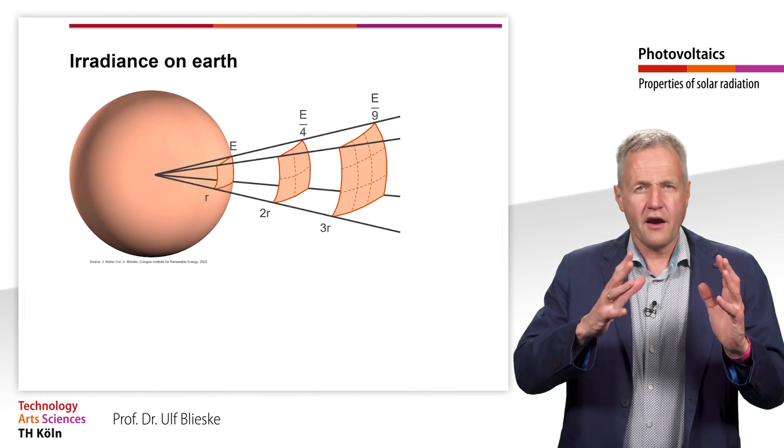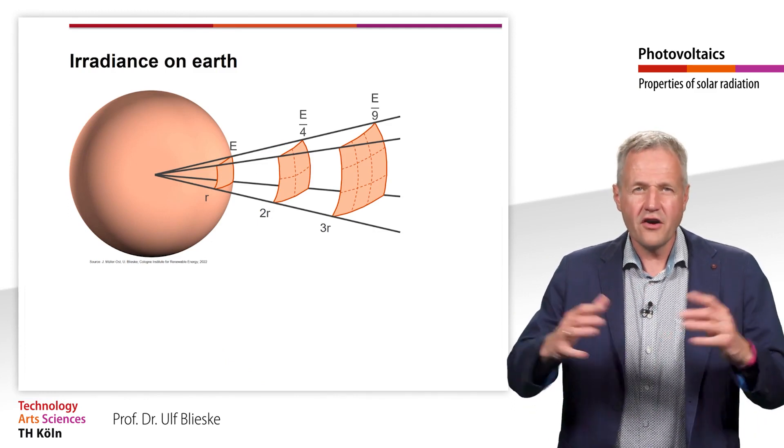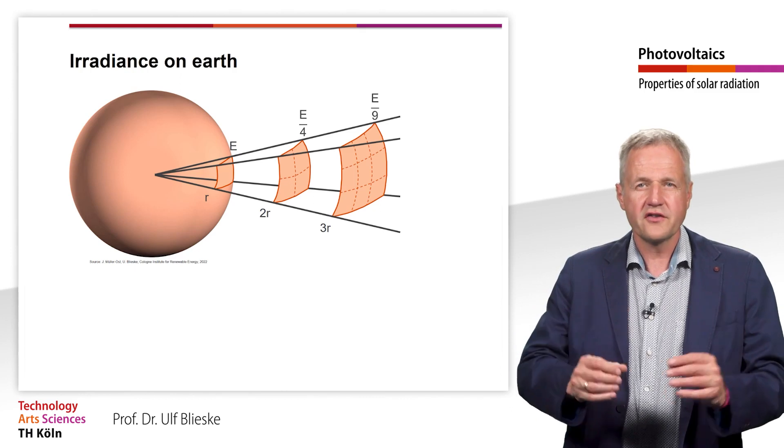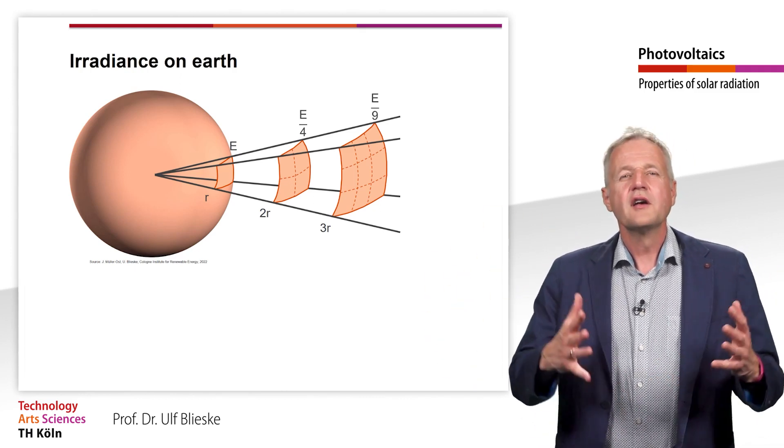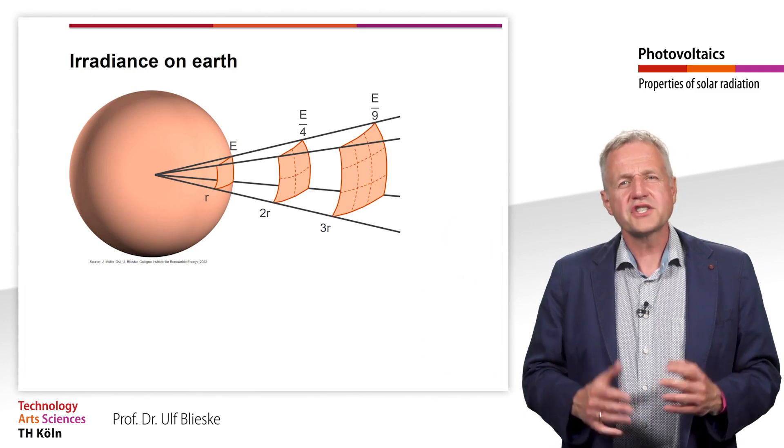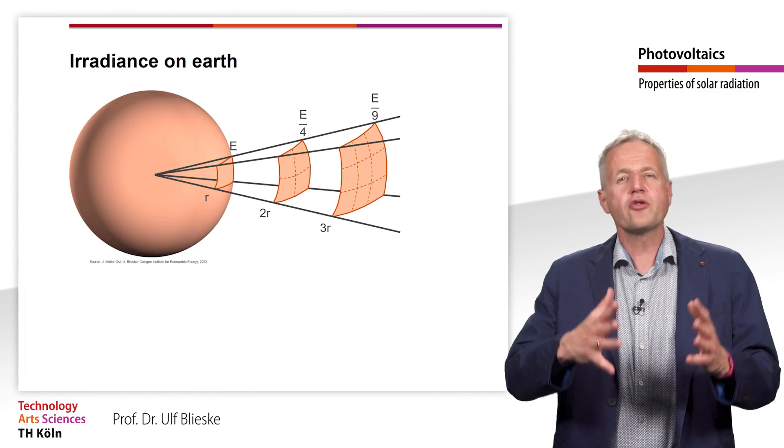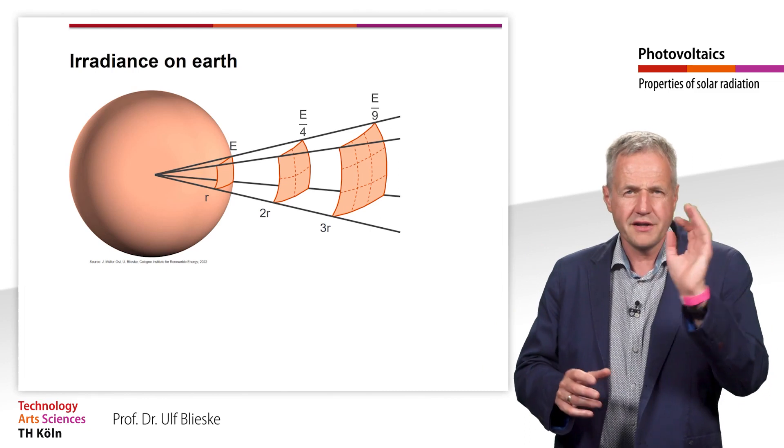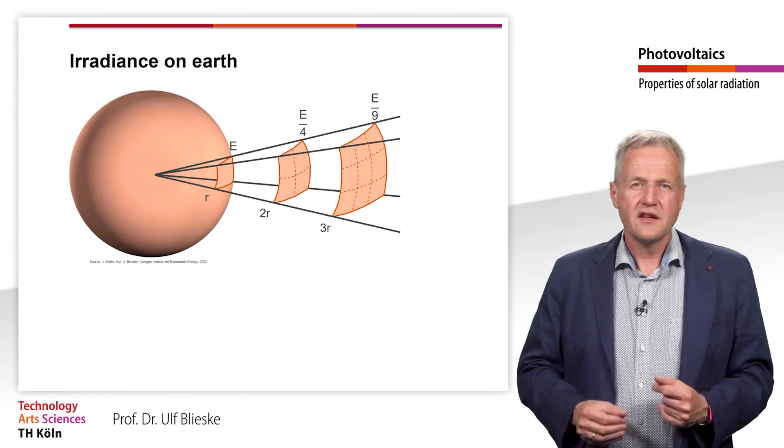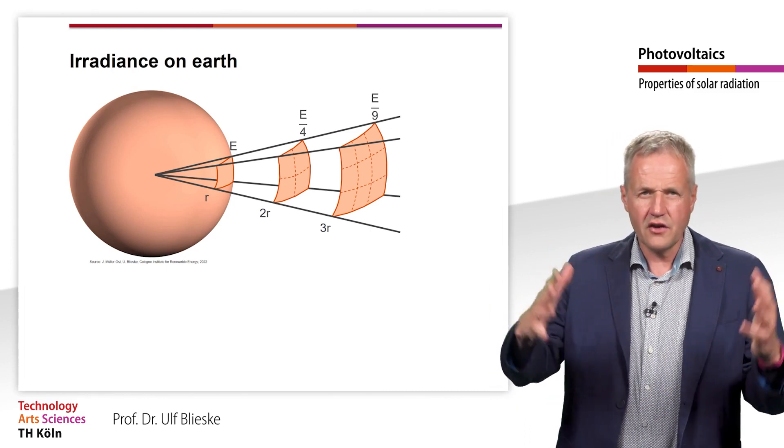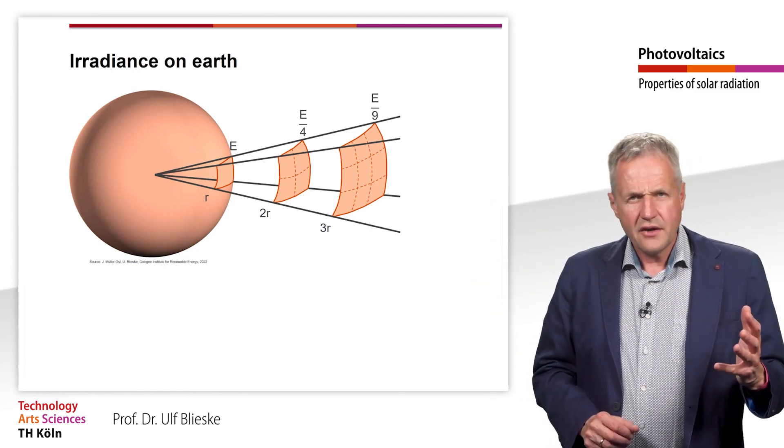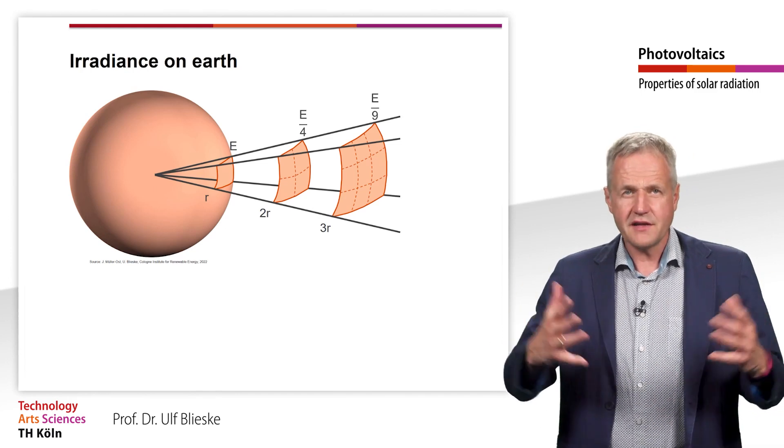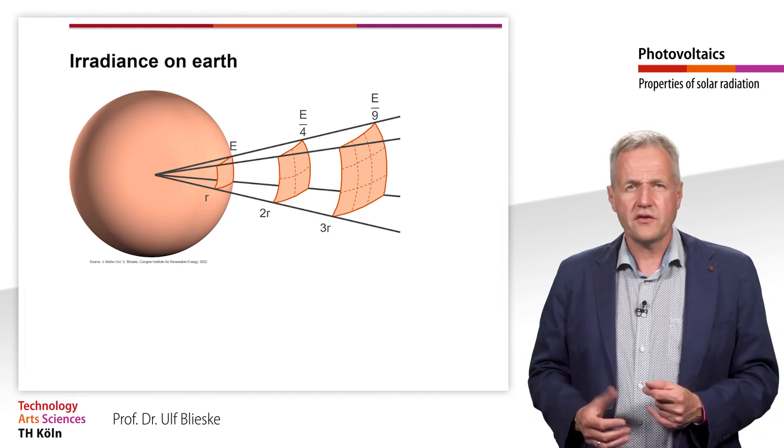However, we are, thanks God, not on the surface of the sun, but on the earth at a great distance from the sun. Because of the large distance, we can consider the sun approximately as a point light source, which radiates light evenly into all solid angles. The irradiance decreases quadratically with the distance from the point source.